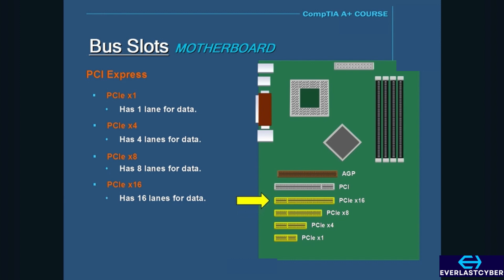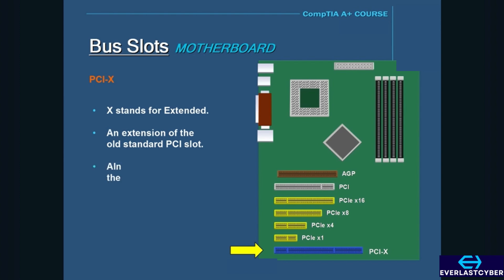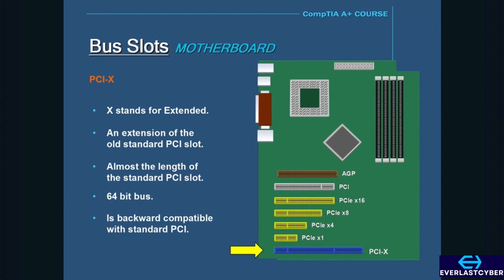PCI Express x16 has succeeded the AGP slot for the video card. There is also the PCI-X slot, where the X stands for extended. The PCI-X slot is basically an extension of the old standard PCI slot and is almost twice the length of a standard PCI slot. The PCI-X is a 64-bit bus, and it is backward compatible with the standard PCI slot. It was mainly designed to work with servers and high-speed computers.